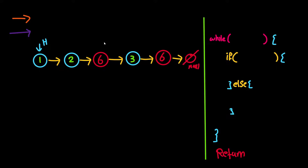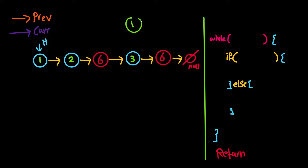We need access to the previous node, but we have a singly linked list which goes in one direction — we cannot access the previous node directly. So we create a previous pointer to track it. The current pointer will track the current node. Whenever we see the value we want to remove, we use the previous pointer to fix that pointer to skip over the removed node. But if we want to remove the head node, there is no previous node — this is an edge case.